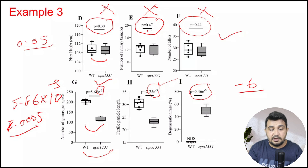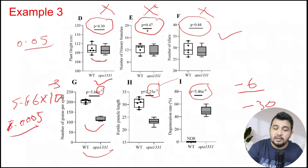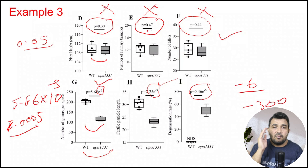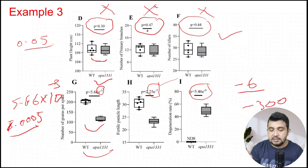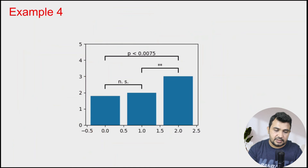Sometimes you may see the p-value exponent as minus 6 or even as large as minus 300 — these are highly highly significant. Whenever the negative exponent is greater than minus 2, the data is significant.